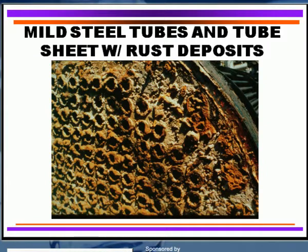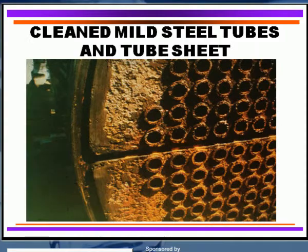Here's a good example of somebody that didn't do that. We have a lot of corrosion product buildup on the tube sheet as well as the tubes — in this case, carbon steel. If you clean that off, you can see that underneath there's been a lot of pitting attack that's occurred in the tubes as well as the tube sheet.